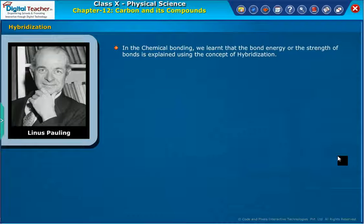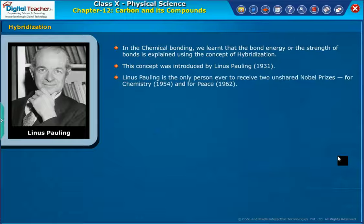In chemical bonding, we learned that the bond energy or the strength of bonds is explained using the concept of hybridization. This concept was introduced by Linus Pauling in 1931. Linus Pauling is the only person ever to receive two unshared Nobel prizes, for chemistry in 1954 and for peace in 1962.